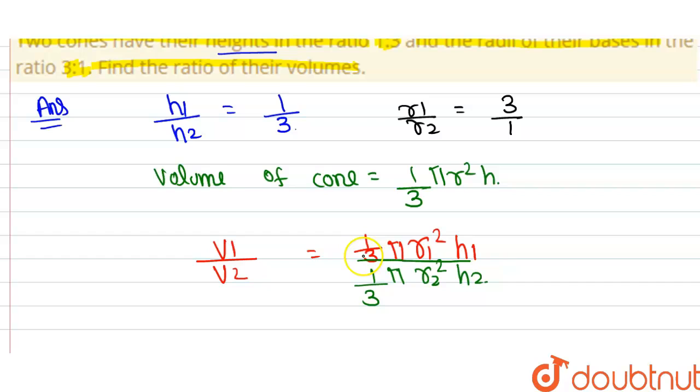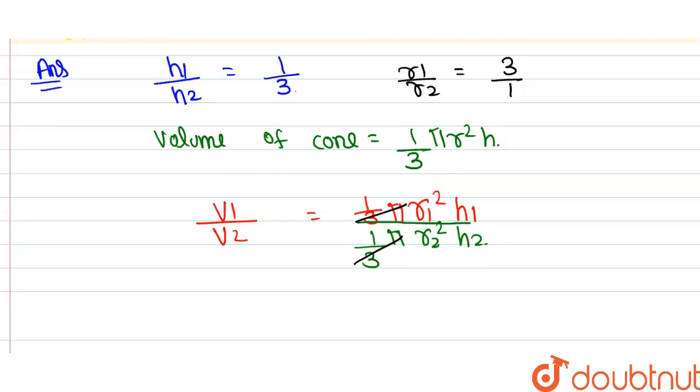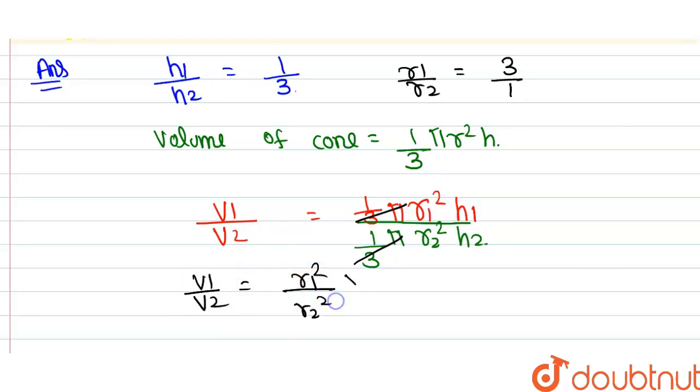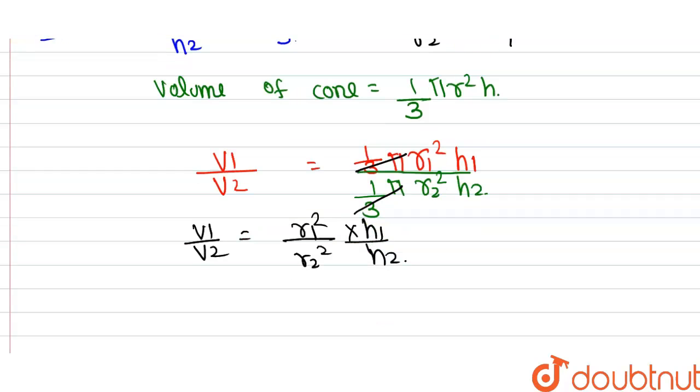Now here 1 by 3 pi and 1 by 3 pi get cancelled out. We get v1 by v2 equals r1 by r2 square into h1 divided by h2.